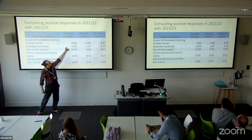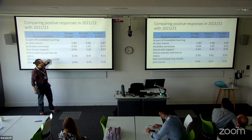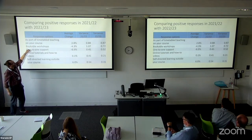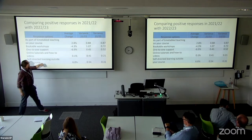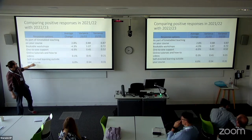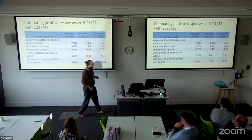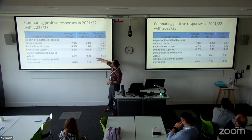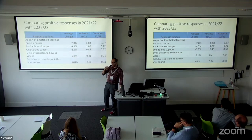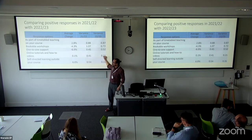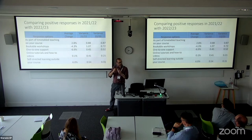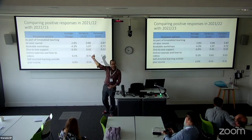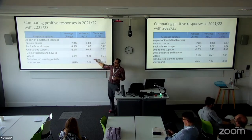Looking at year-on-year change from 2021 to 2022–23: timetabled teaching went up a touch, bookable workshops down a bit, one-to-one support down a bit, online tutorials almost exactly the same, and self-directed learning up quite a bit. The variance measure for online tutorials and how-to videos was very low — around 0.2, which is really quite low — confirming they were the most popular option in every school except one, in both years, very consistently. The actual variation wasn't a case of it being super popular one year and just quite popular the next — it's a really consistent pattern.